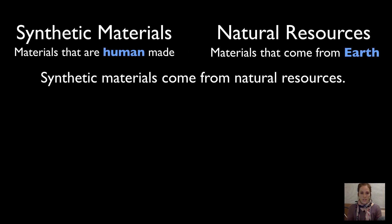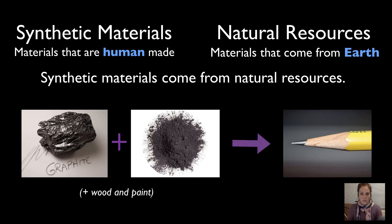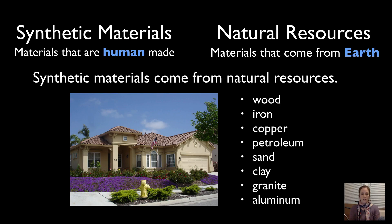For example, the pencils we use today have to be made from natural resources. What we generally call the lead inside pencils is actually not lead at all — it's a mixture of graphite and clay. When pencils were made in the 18th century, pencil makers thought it was lead, but they were corrected much later by chemists. The name stuck, but they're made from natural resources. Same with houses, which use wood, iron, copper, sand for glass, and aluminum.